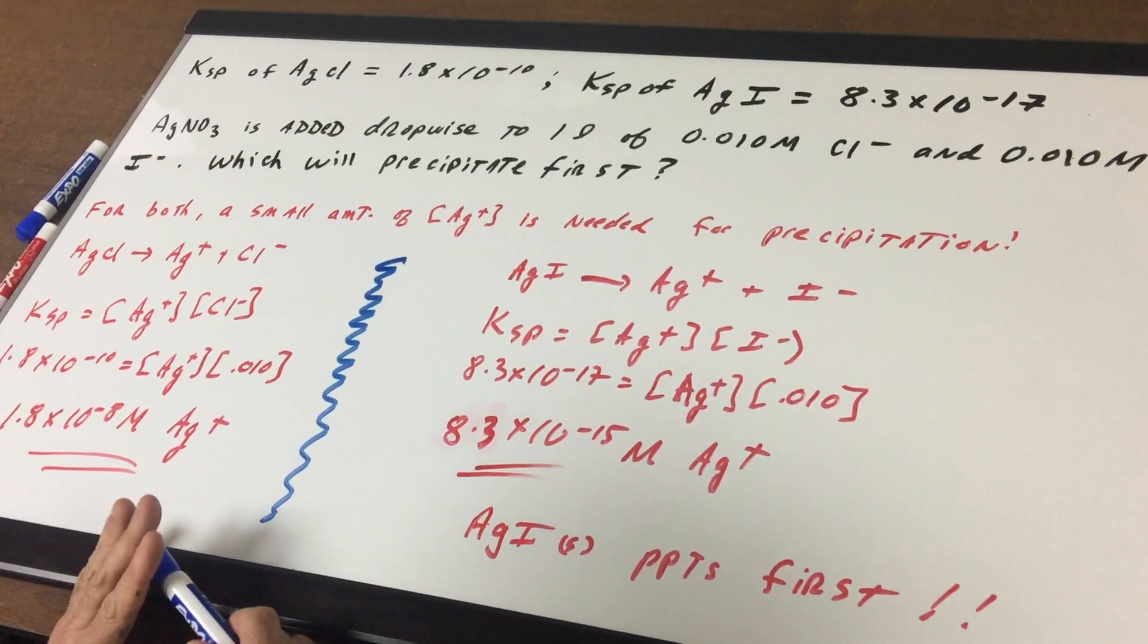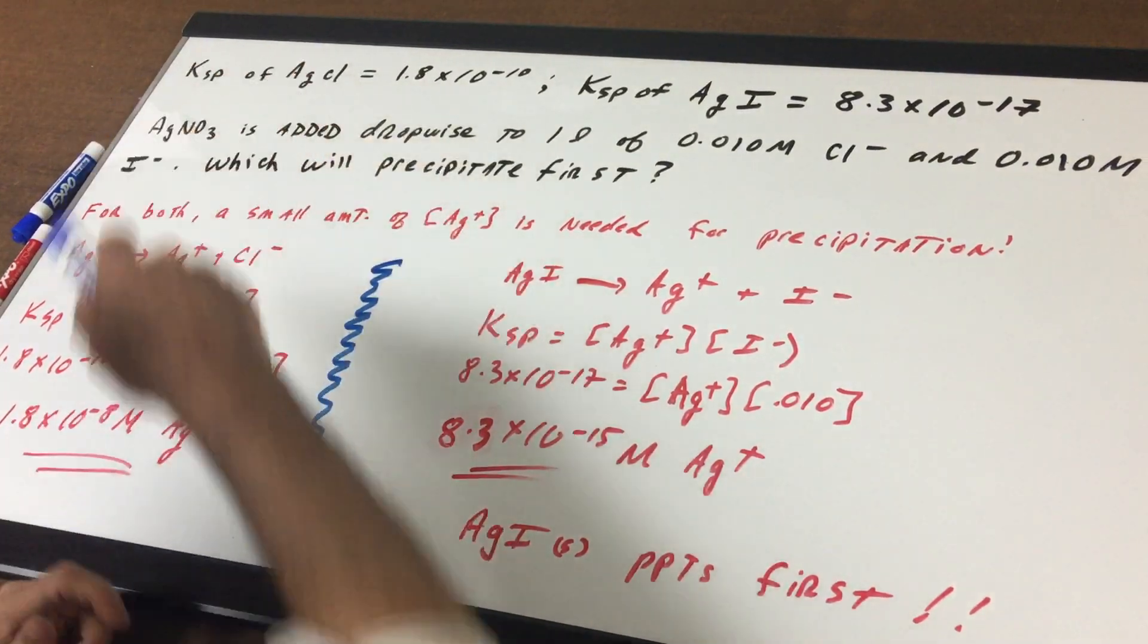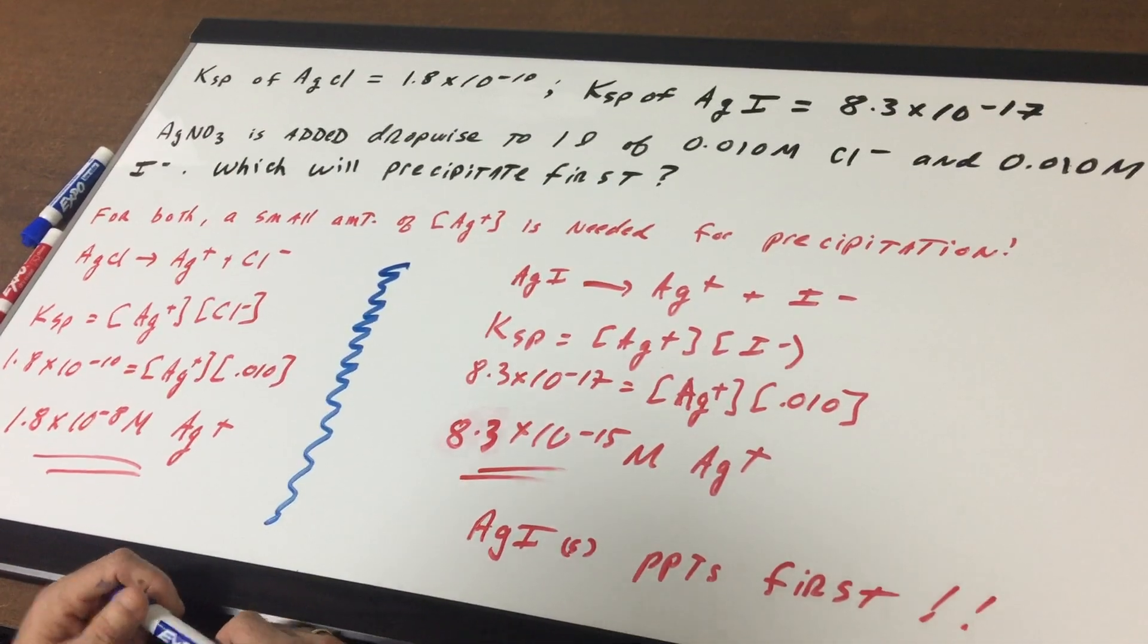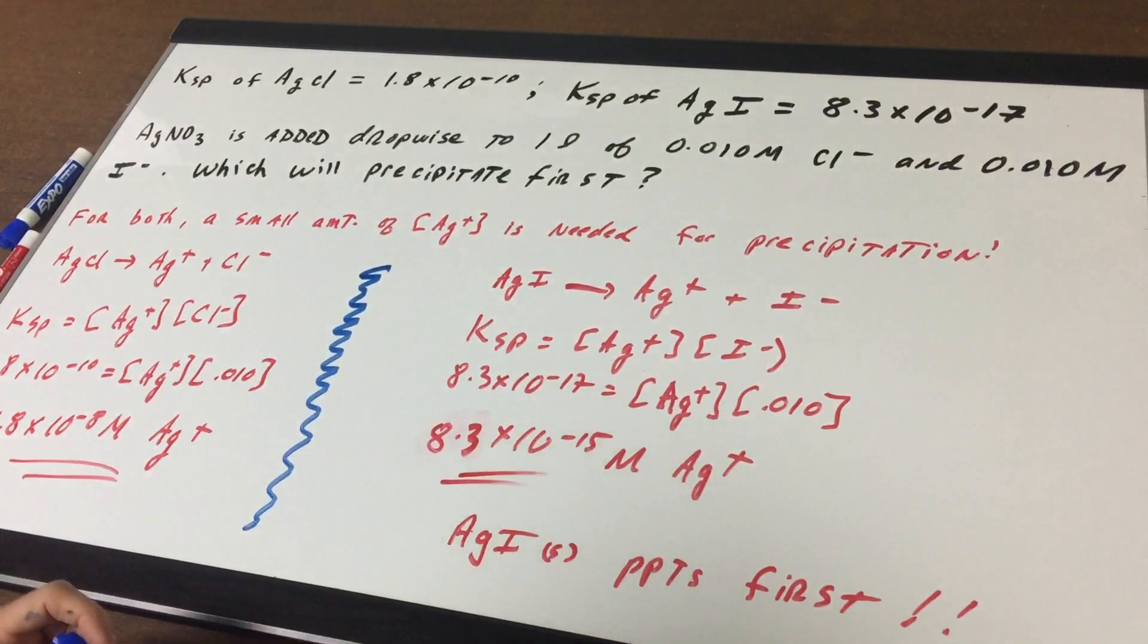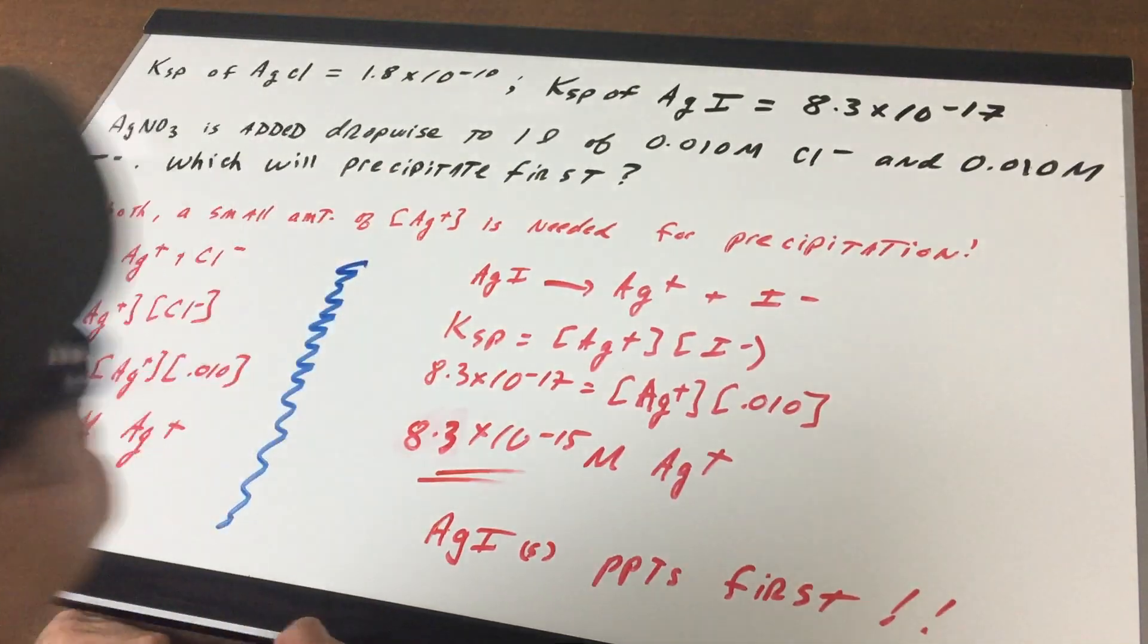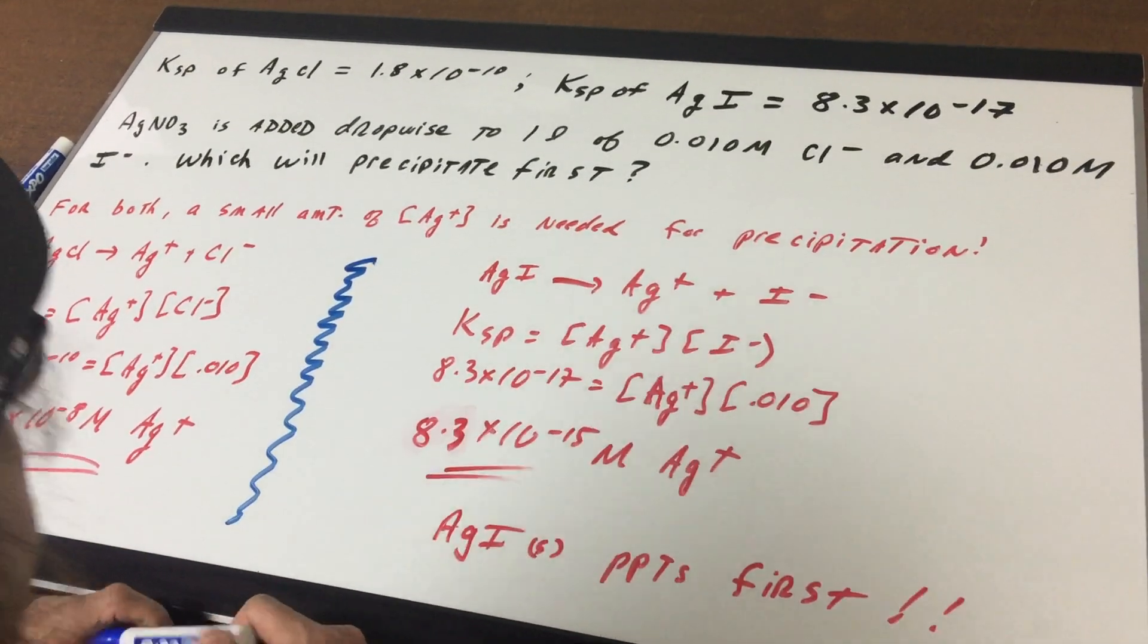So we want to basically know, would we get silver chloride, which would be a white solid, or would we get the tan solid, which would be the silver iodide?